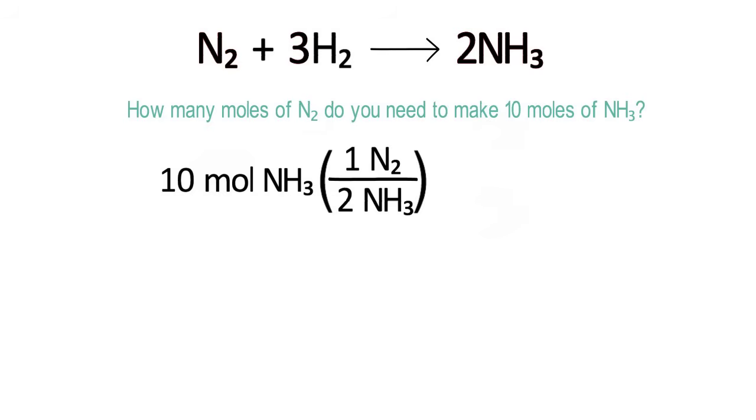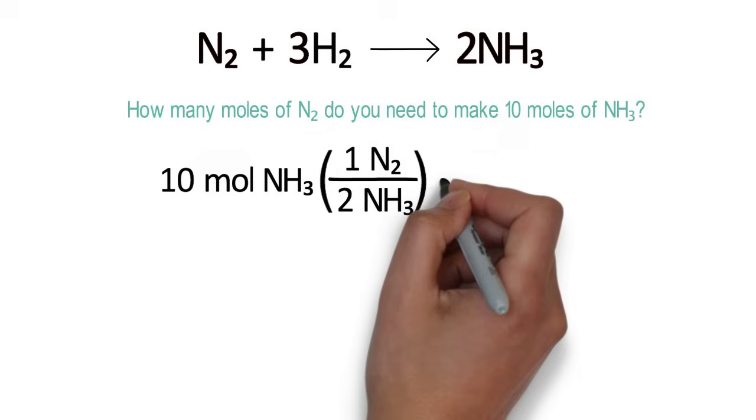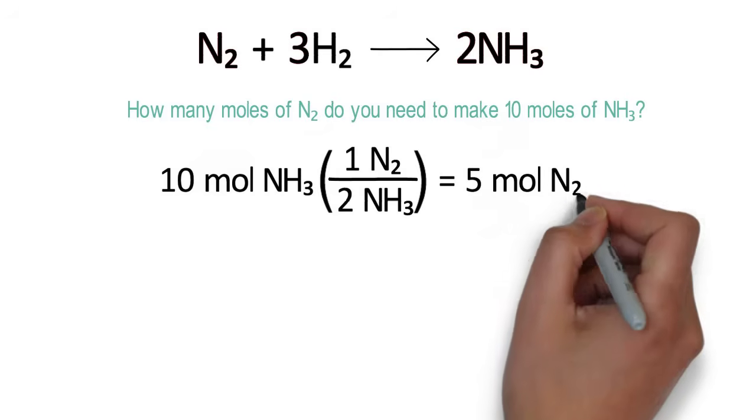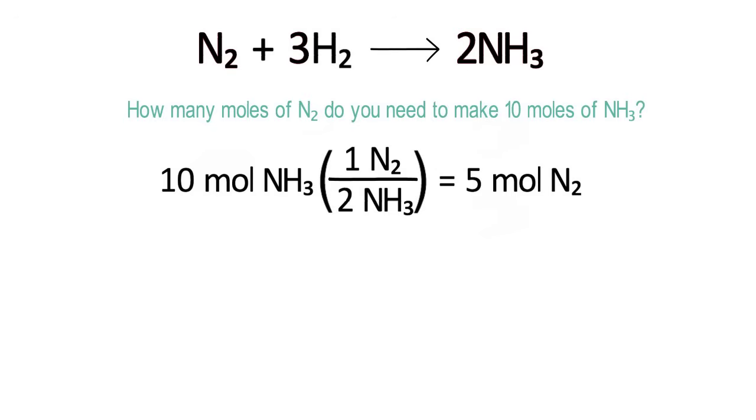Last of all, do the fraction multiplication. 10 times a half is equal to 5. As for the units, notice that the ammonia we started with cancels out with the ammonia on the bottom of the fraction, and we are left with moles of nitrogen, which is exactly what we want.